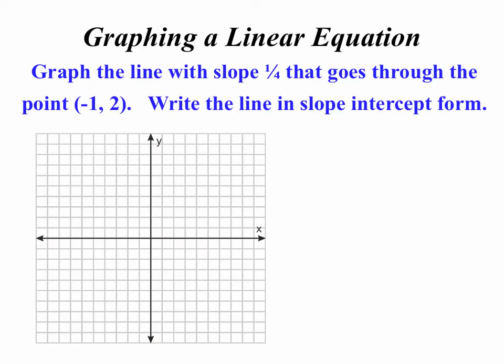Alright, let's graph a line which goes through a given point. Let's always start with the point. And now use the slope of up 1 over to the right 4. Connect those dots. And oh darn it, this y-intercept is not clear. So we cannot conveniently use y equals mx plus b. Use the point-slope form instead. Now substitute in your slope of 1 fourth and x1, y1 is negative 1, 2.